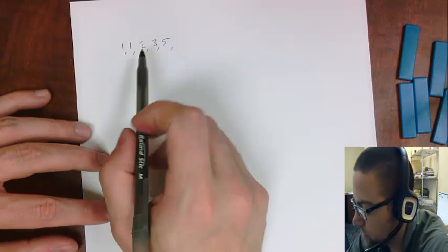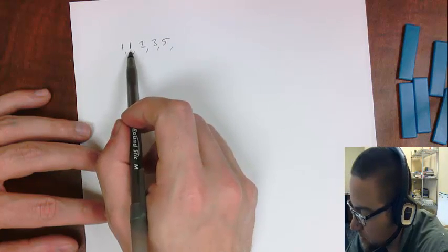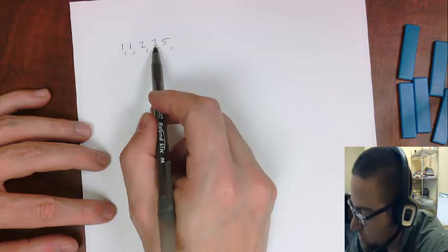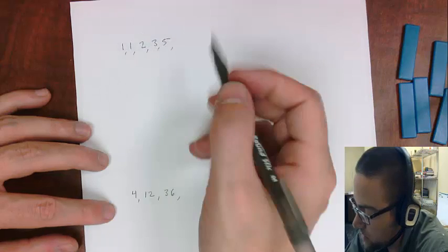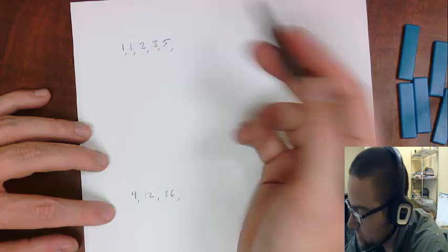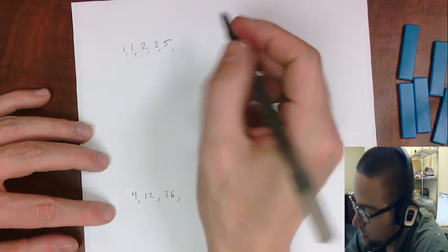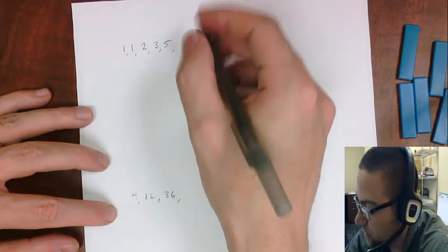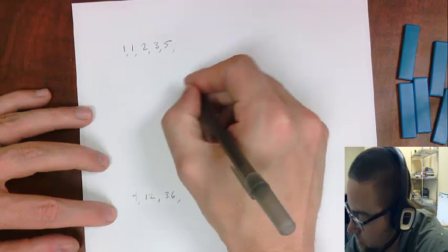Here's kind of a different type. So here we don't add anything. Then it looks like we add 1. Then it looks like we add 2. Then it looks like we add 3. Actually we add the previous number, right? So this is kind of a special sequence. It's called the Fibonacci sequence.